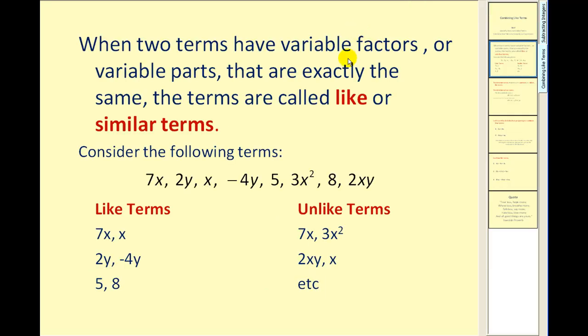When two terms have variable factors or variable parts that are exactly the same, the terms are called like or similar terms.